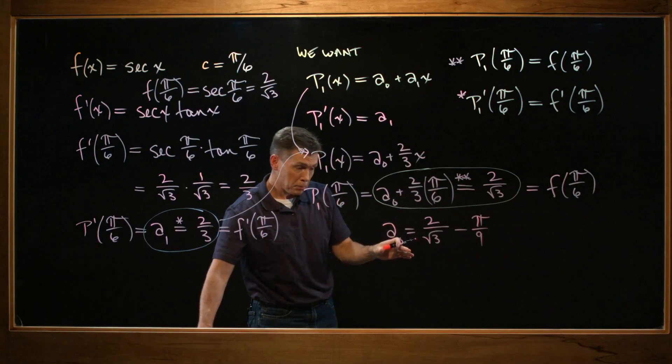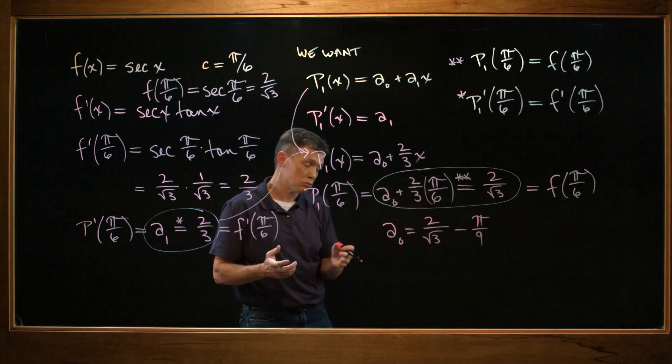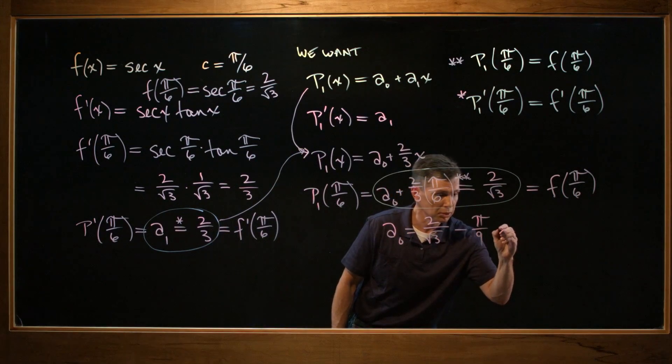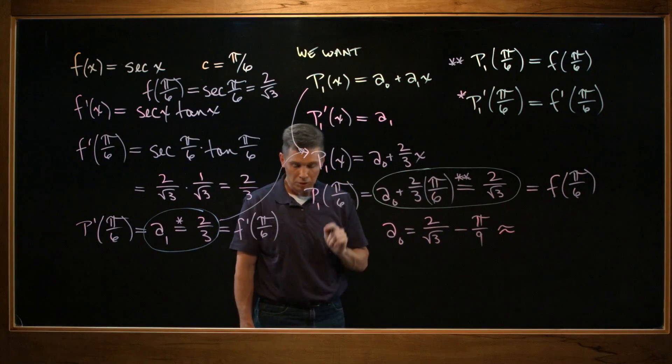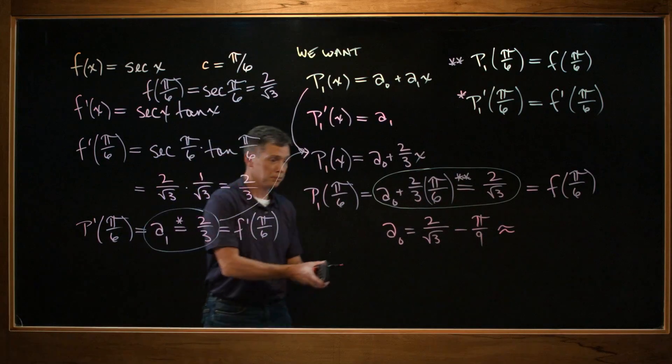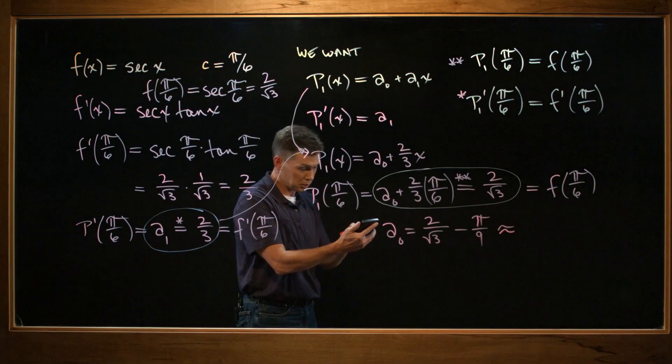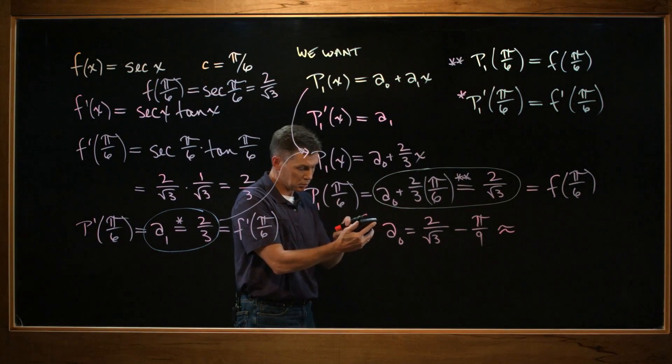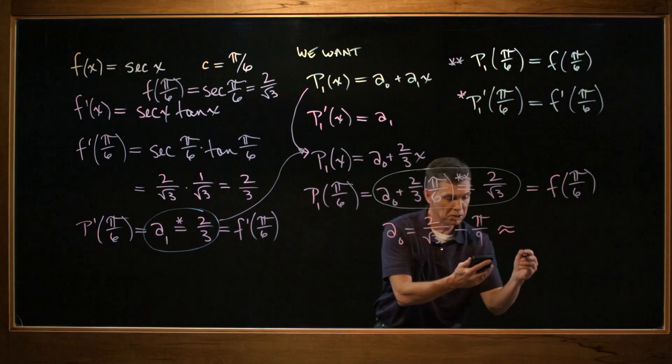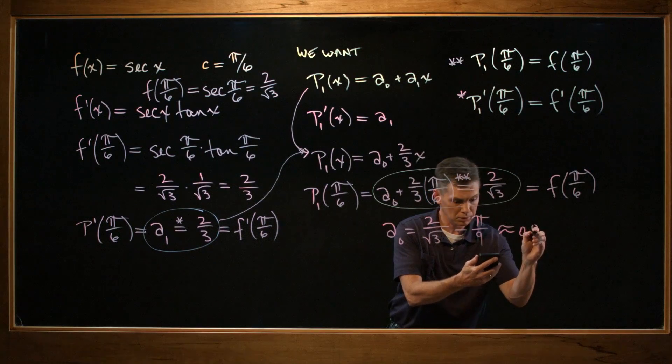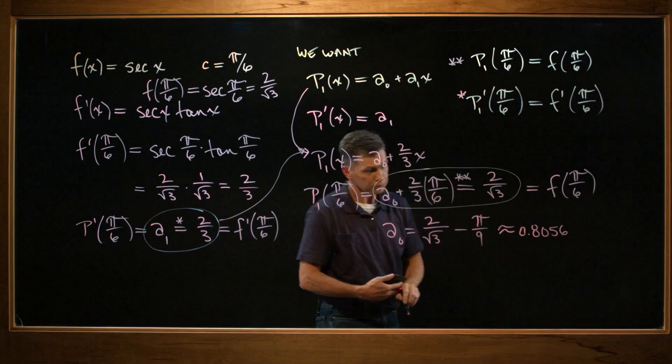OK, and I'd be happy with that, but we are going to end up going to a graphing utility right now, in a minute, and graph this. So if you'd rather end up entering a decimal approximation, you can. Again, I'm not bothered by that at all, if you want to keep your fractions. I'll grab a calculator and compare with you, if you're going to get a decimal. So I'm just entering 2/√3, and then subtracting π/9. So maybe to 4 decimal places, 0.8056.